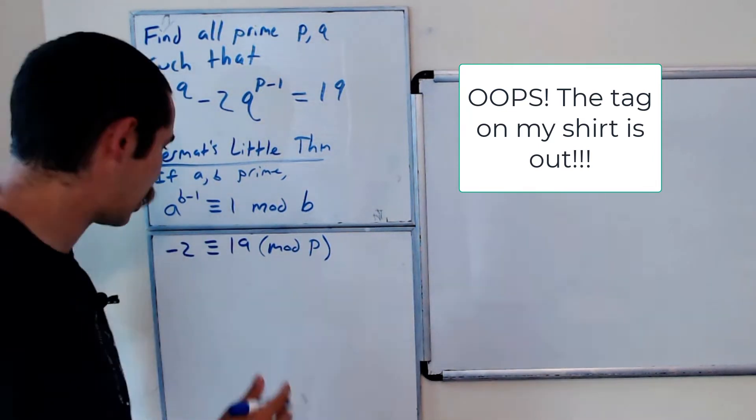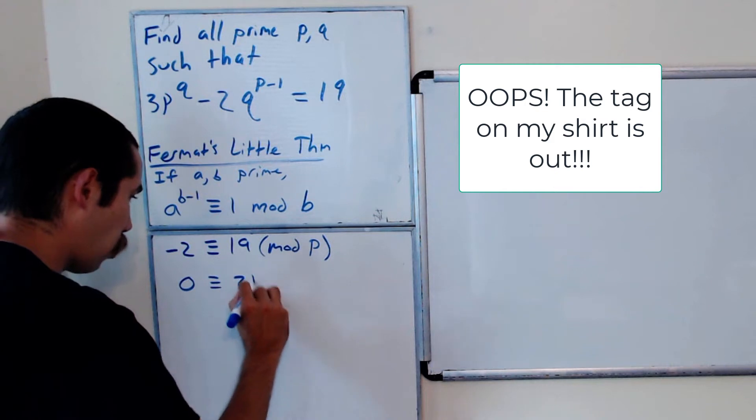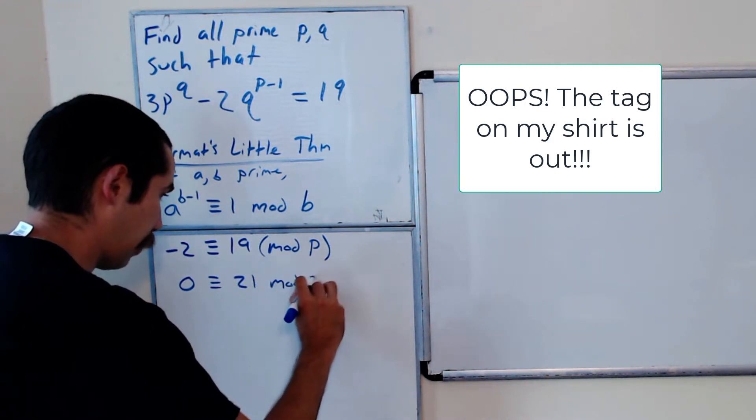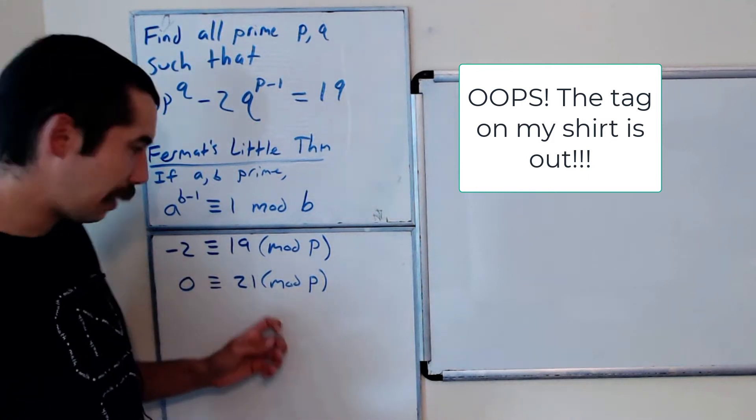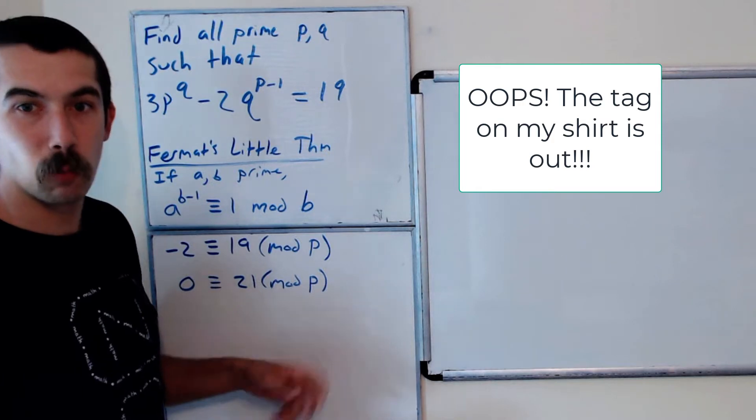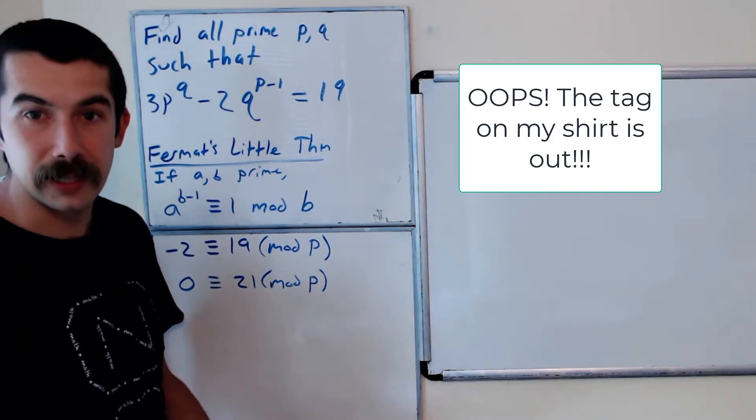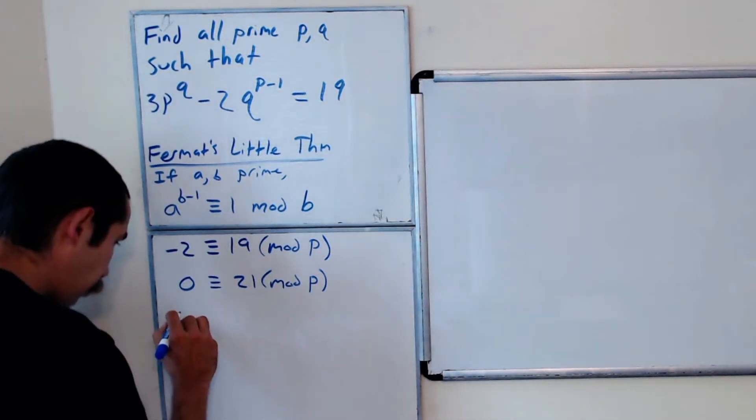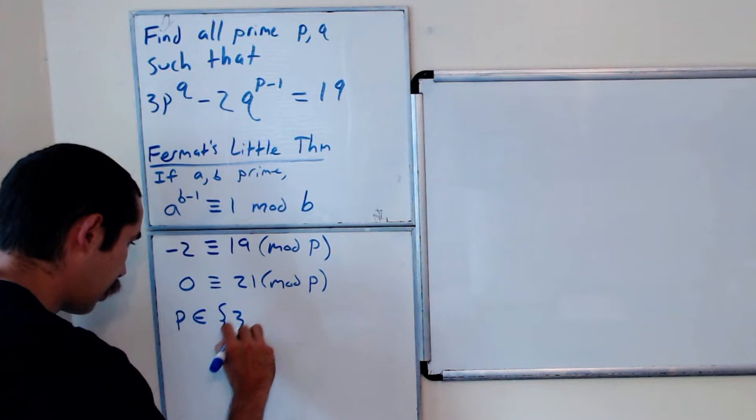Bringing everything to one side, we have 0 is congruent to 21 mod p. What does this mean? It means that 21 is divisible by p. So what prime numbers go into 21? Well, 3 and 7. So this means that p is an element of the set {3, 7}.